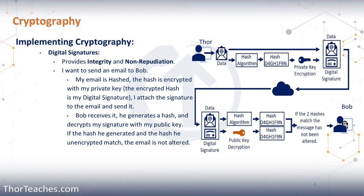I send that over the Internet. Bob receives it, then uses my public key to decrypt it. He then uses the same hashing algorithm, and those two hashes — from the algorithm and the one I sent — have to match. If they do, we have message integrity. And since Bob decrypted this with my public key, that proves the message came from me, which provides non-repudiation.